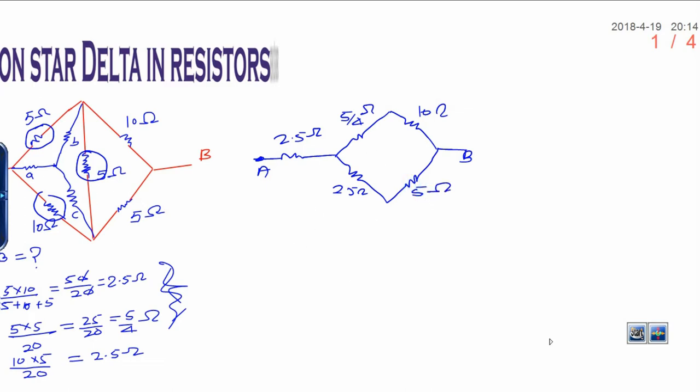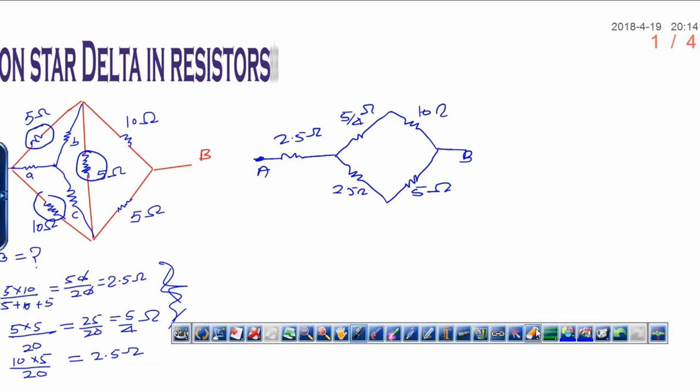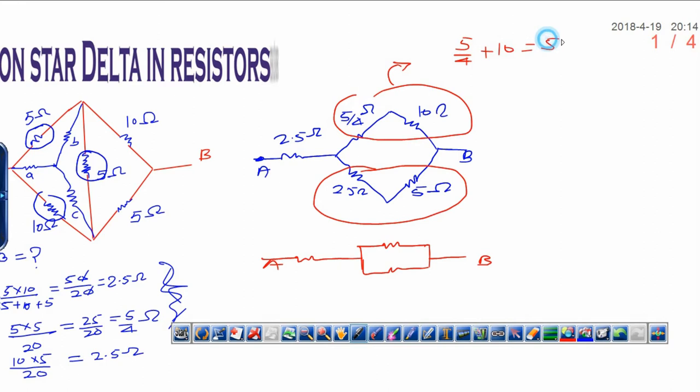Now problem becomes very simple. These two are in series and these two are also in series. Now further it can be simplified by this way, A and B. This simplified is 5 by 4 plus 10, this is 12.5 ohms. Now this will be 50 upon 4, 12 upon 4 means 25 by 2 ohms, that is 12.5.